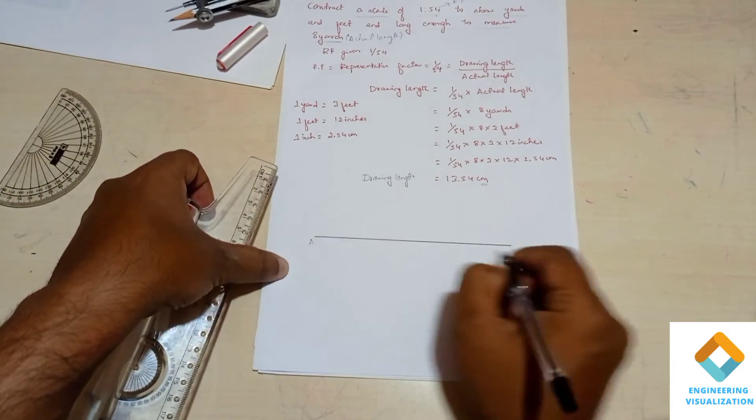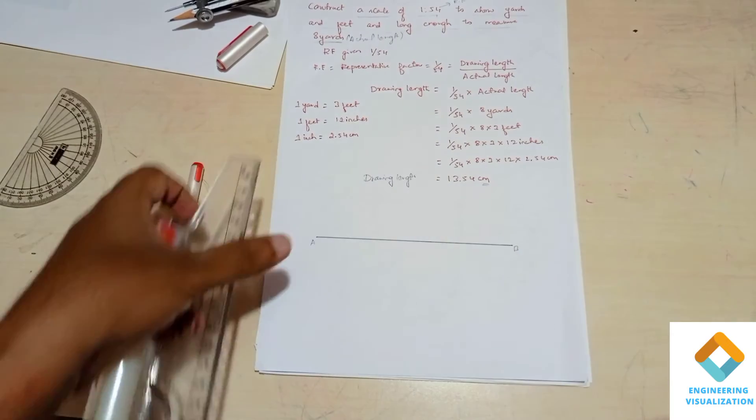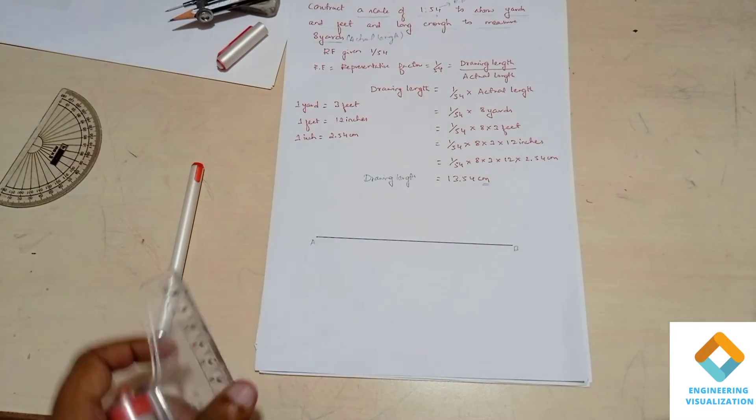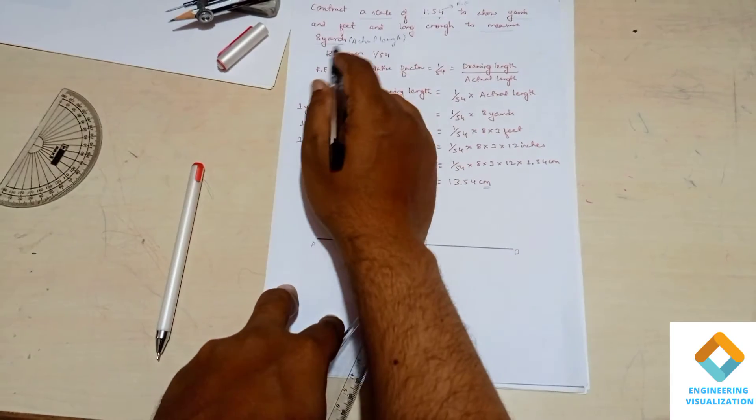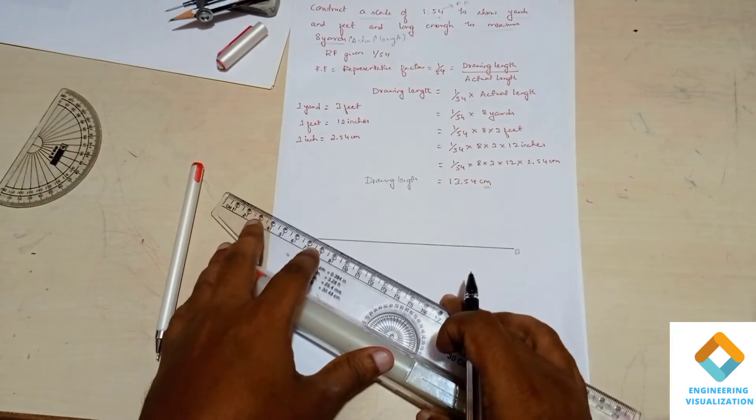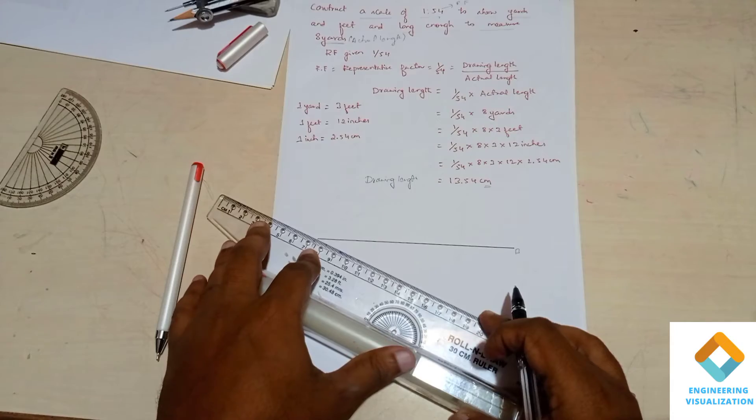Can give this as A and B. And now here you can see, this scale we have to divide into 8 equal parts because we need to make this scale to measure 8 yards. That is dividing this scale line into 8 equal parts.